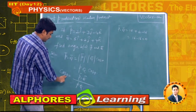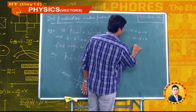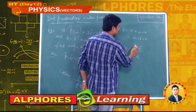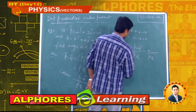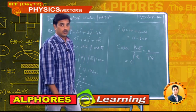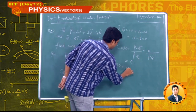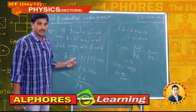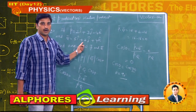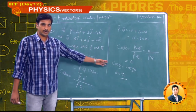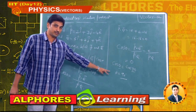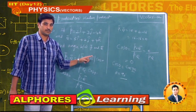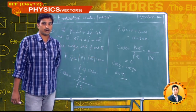cosθ = (p̄ · q̄) / (pq) = 0 / (pq) = 0. Since cosθ = 0, we replace it with cos90°, so θ = 90°. The angle between p̄ and q̄ is 90°, meaning these two vectors are orthogonal — or perpendicular to each other.